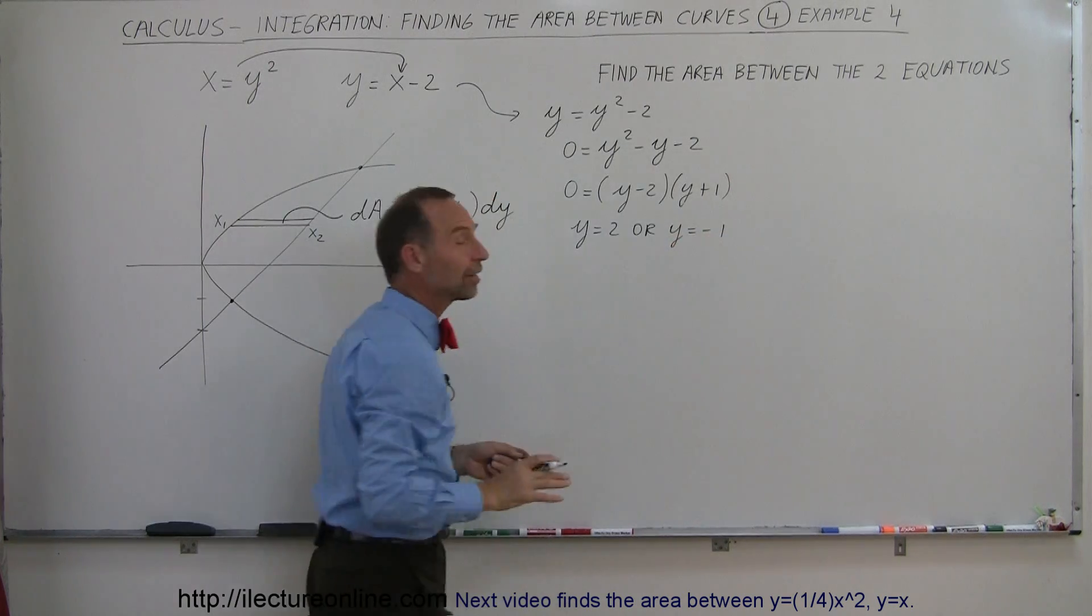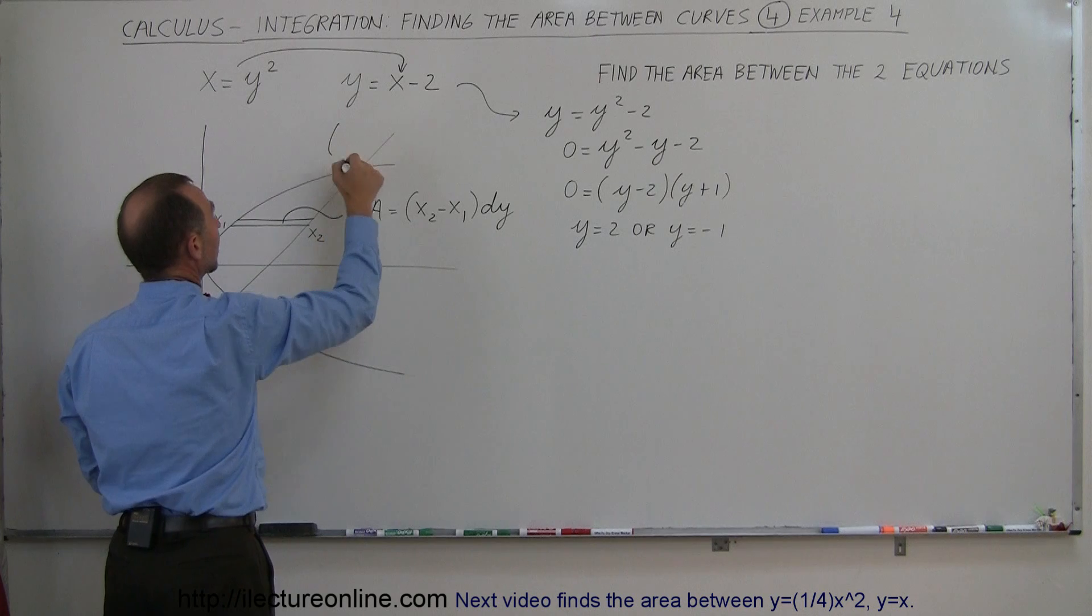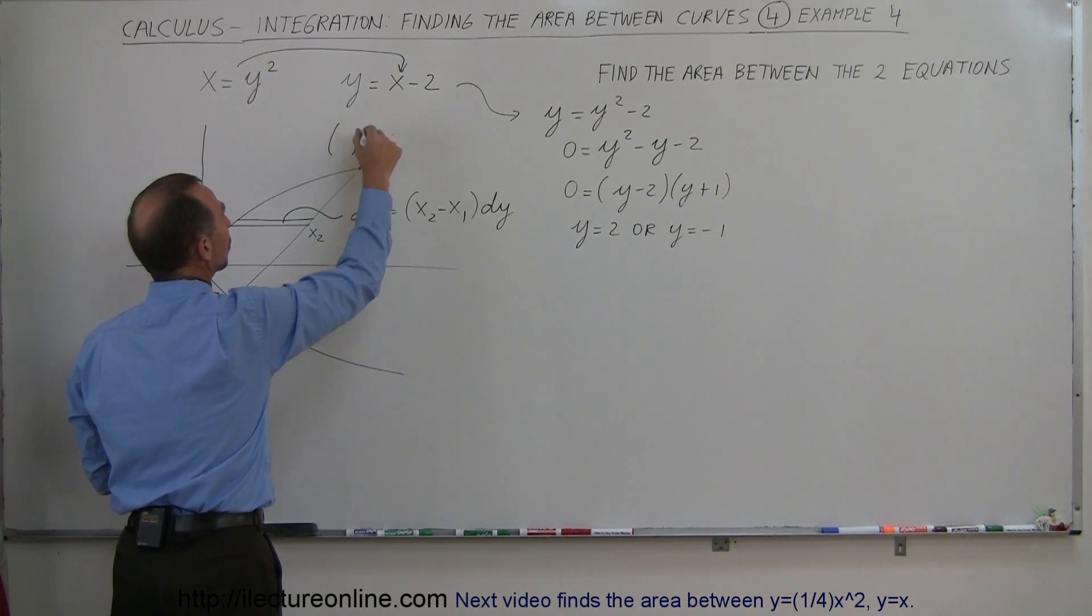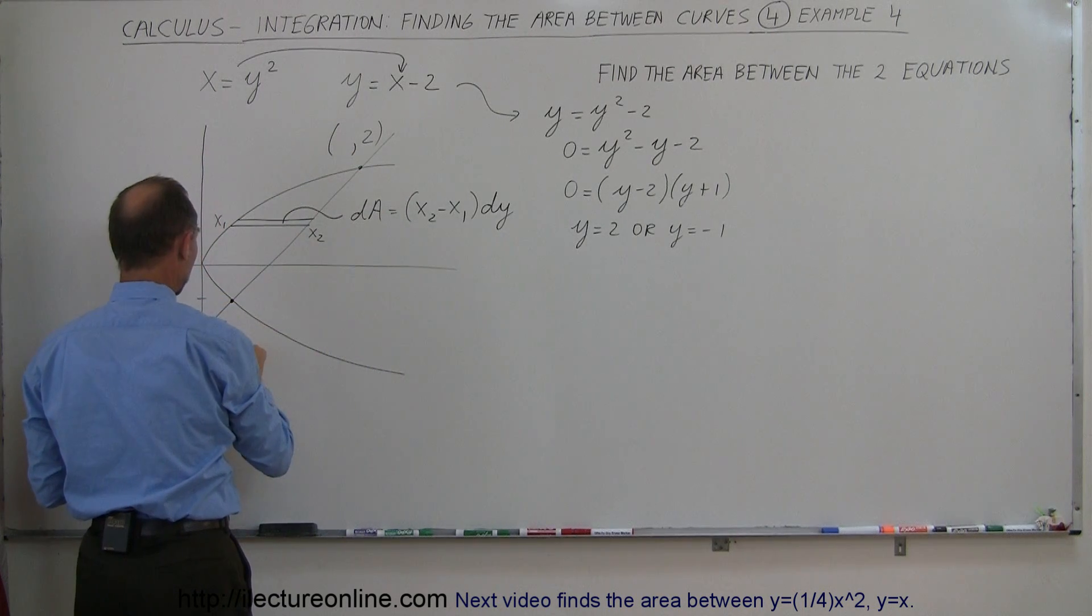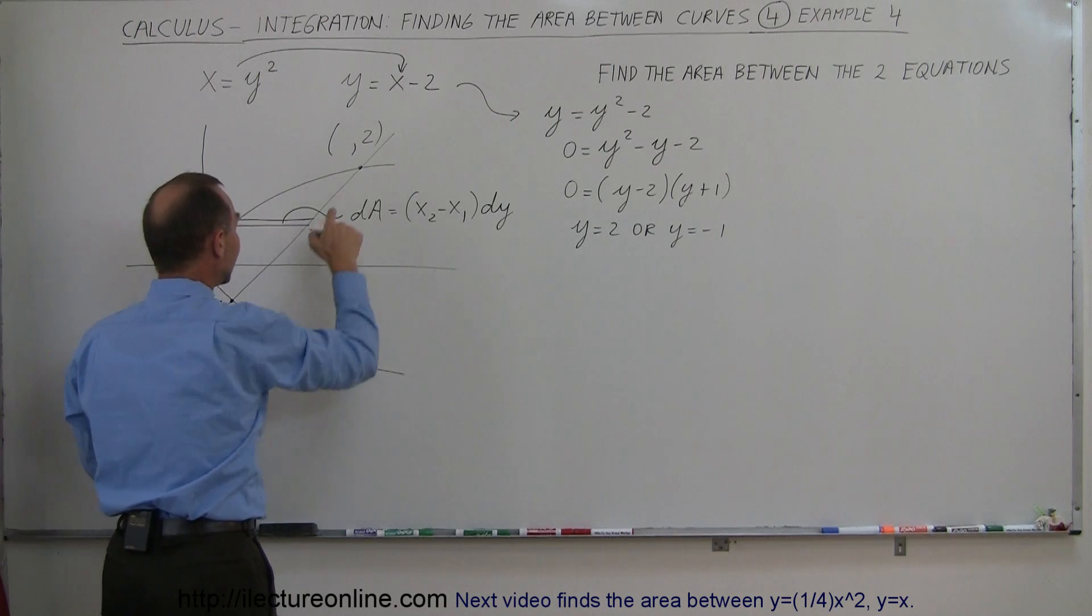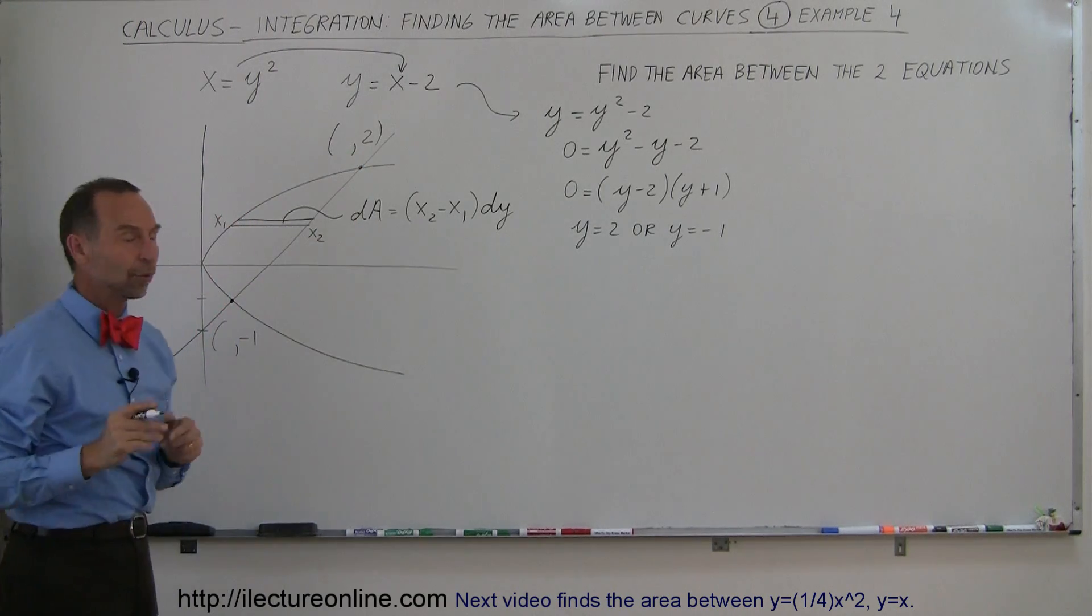So those are the two y values where the two equations cross. So right here, that looks like y would be 2, and over here, that would be like y is a negative 1. I still need to find the x values for those two.